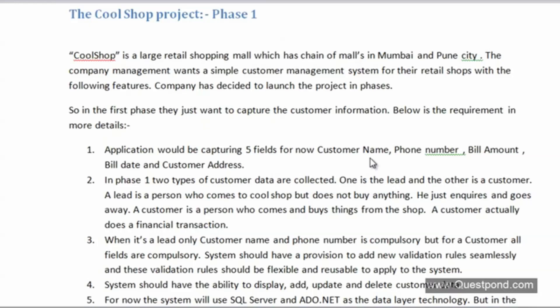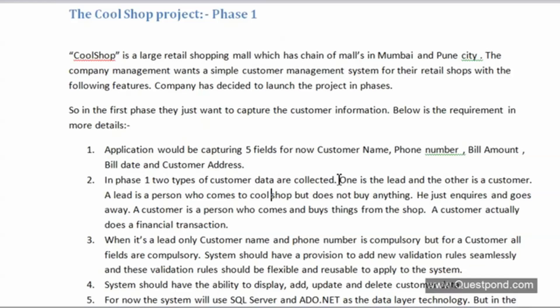The requirements for phase one: Requirement one — the application captures five fields: customer name, phone number, bill amount, bill date, and address. Requirement two — in phase one there are two types of customers: a lead, who comes to the shop but doesn't buy anything (just inquires), and a customer, who actually comes and makes a financial transaction.